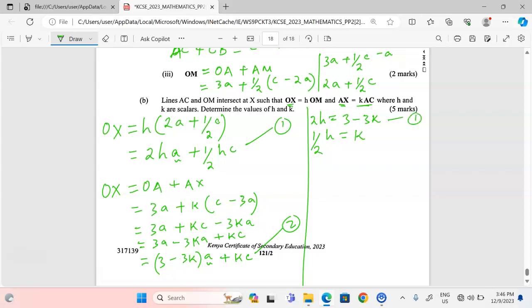With this as the first equation and this one as the second, now we can solve them simultaneously. We can see very well that if we make h the subject, say h equals 2k from equation two, so that we substitute in equation one wherever we have h we substitute with 2k. Therefore, 2 times 2k equals 3 minus 3k, so 4k equals 3 minus 3k. When 3k gets to the other side we will have 7k equals 3, and the value of k will be given as 3/7.